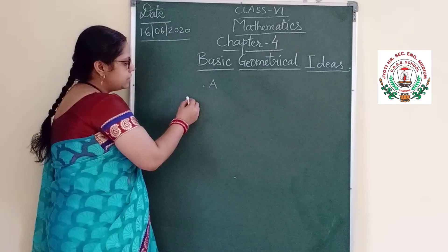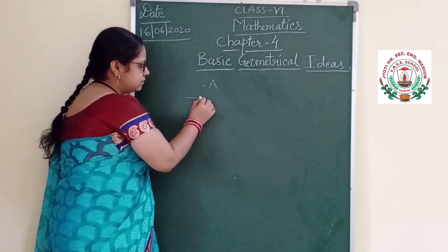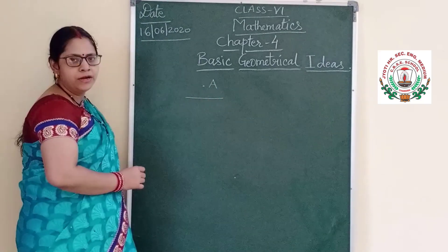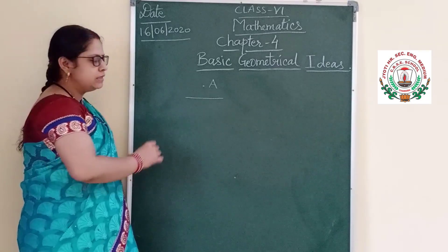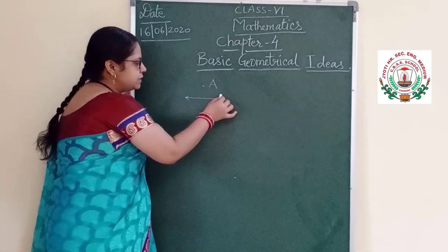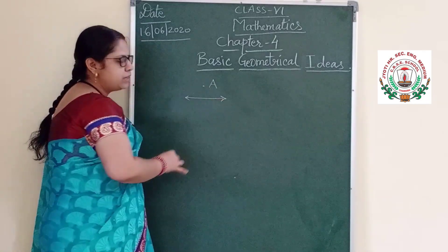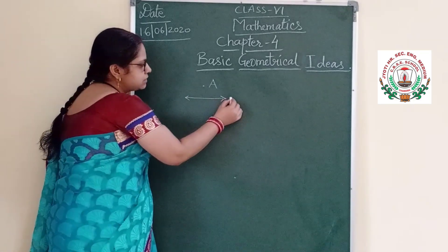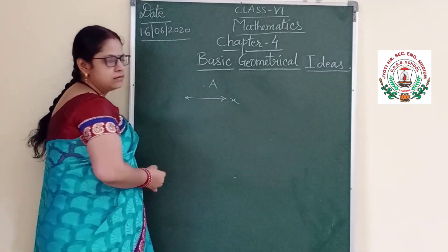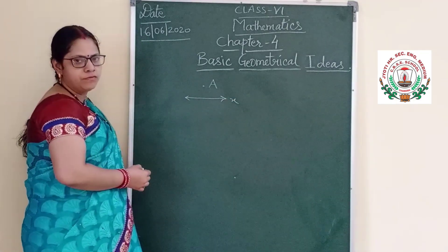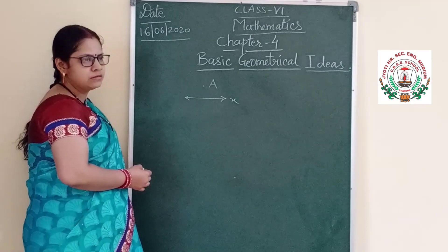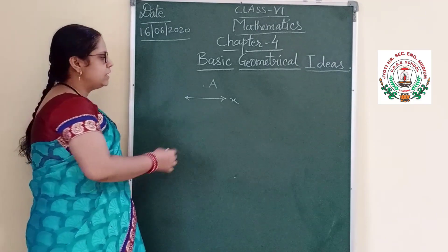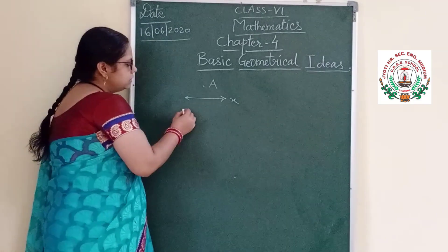The second thing is a line. This is a line. A line does not have any end point — it is just a line. Both sides we are showing it by an arrow. This can be denoted by any small alphabet, like small X, Y, Z, L, M, N, A, B, C and so on.